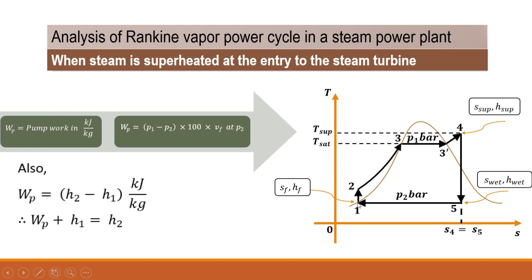Process 1 to 2 is the pump work, so in terms of enthalpy it is H2 − H1. Rearranging: H2 = WP + H1.